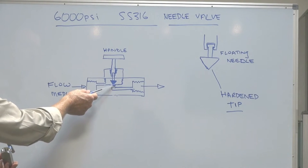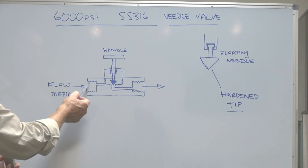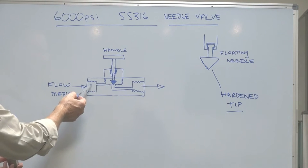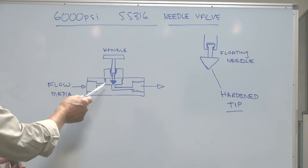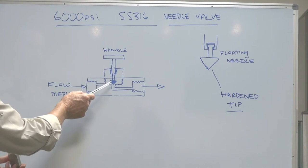This restricts the flow. Even though the actual porting might be a half-inch, three-quarter inch, or one inch, the actual orifice inside might only be five millimeters. It's designed to control a precise flow at very high pressure down to nothing.